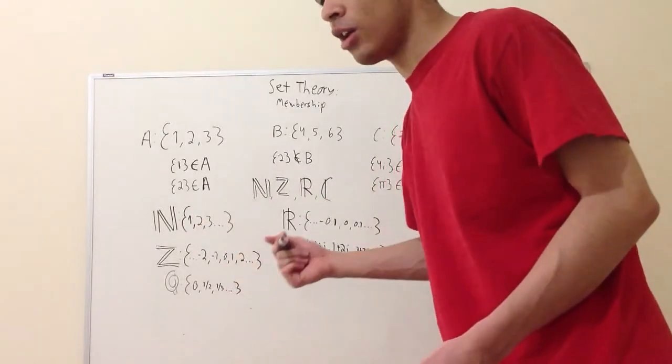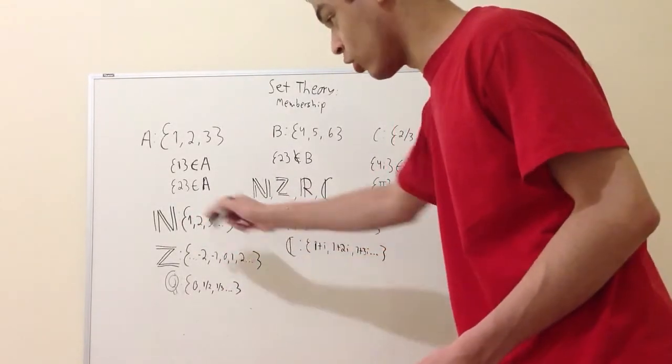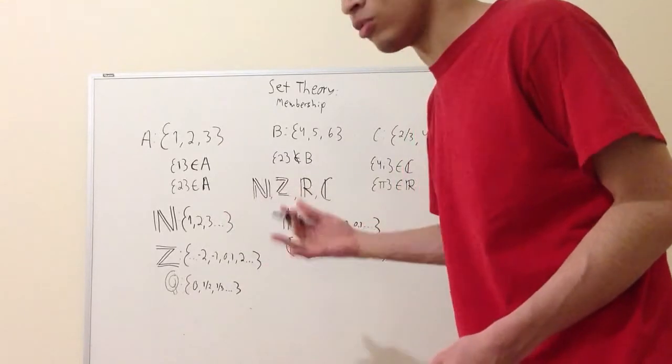The naturals are all the typical numbers that elementary school kids learn: one, two, three, four, five, six, so on and so forth, just positive numbers.